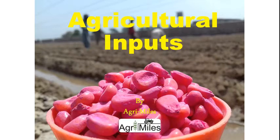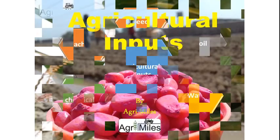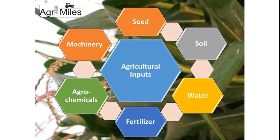Dear viewers, today we will talk about agricultural inputs — all those inputs which are very much needed to perform agricultural practices. First of all, we will enlist them: seed, soil, water, fertilizer, agrochemicals, and farm machinery. These are the six basic and foremost important agricultural inputs, and we will discuss them one by one.